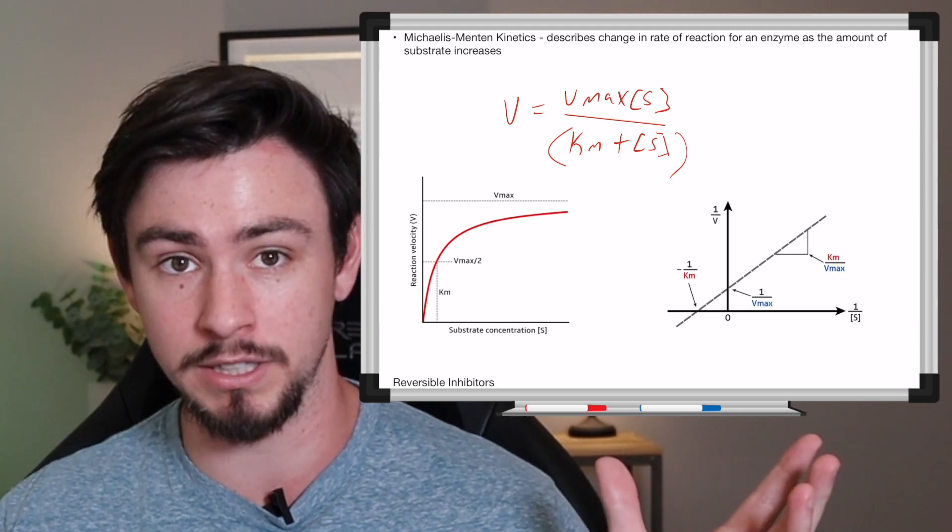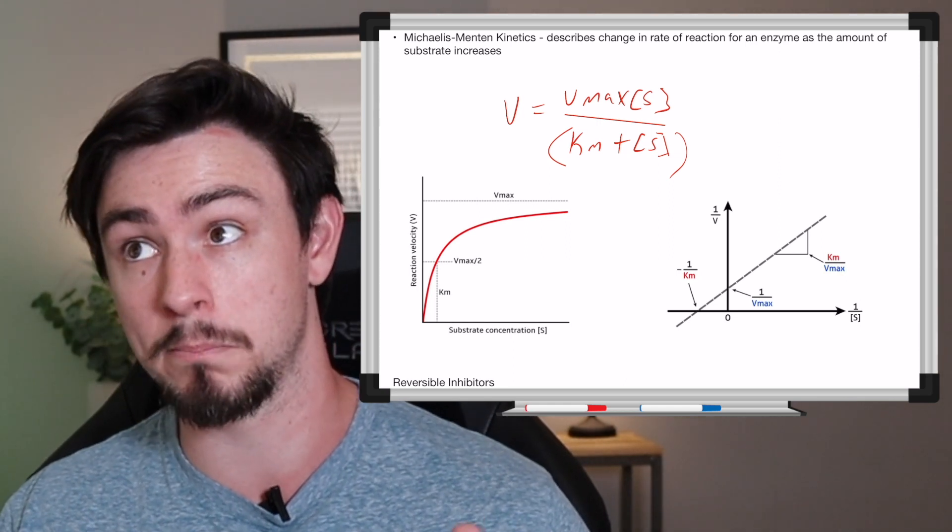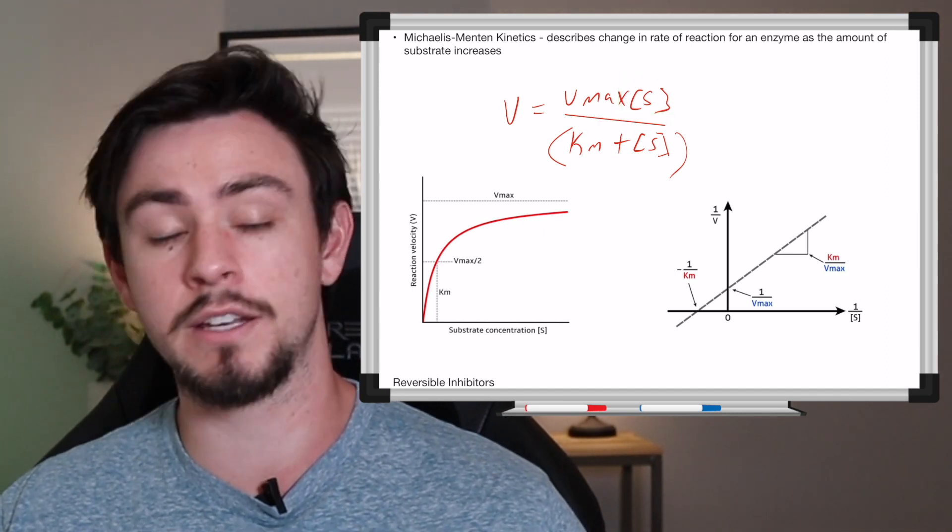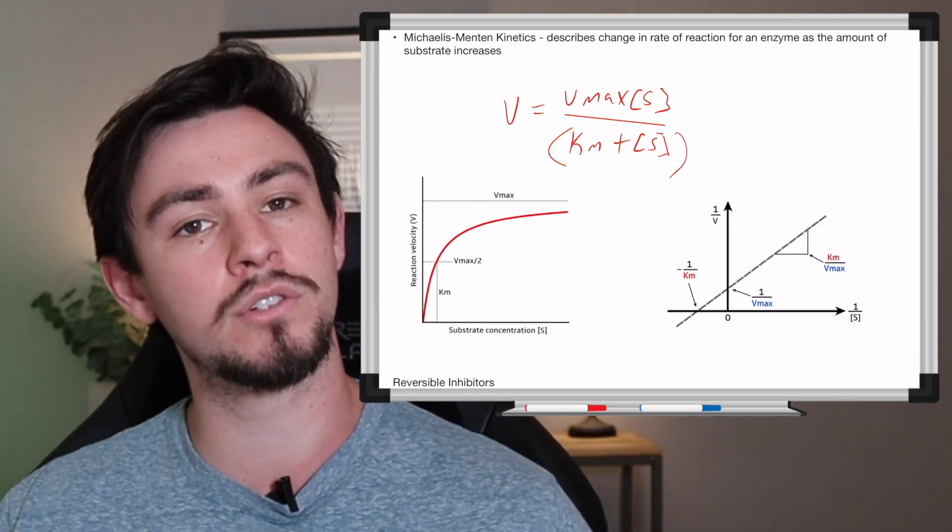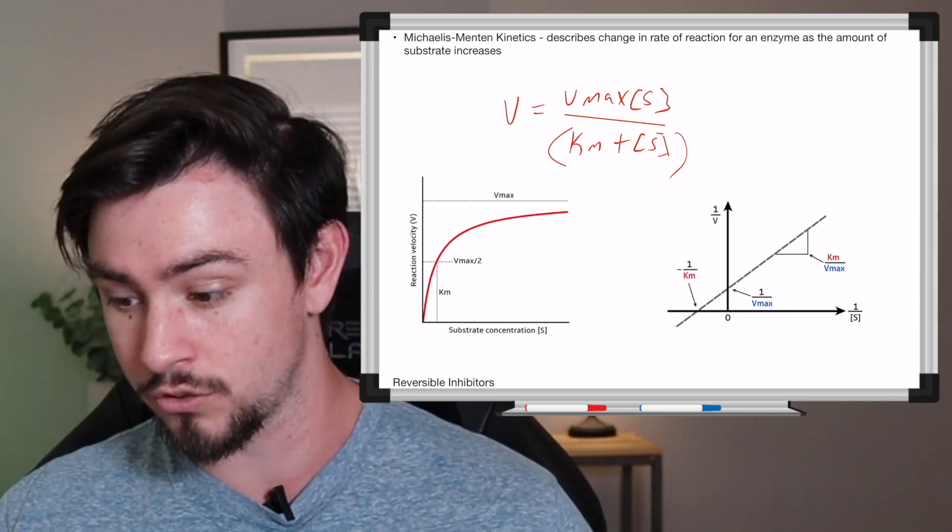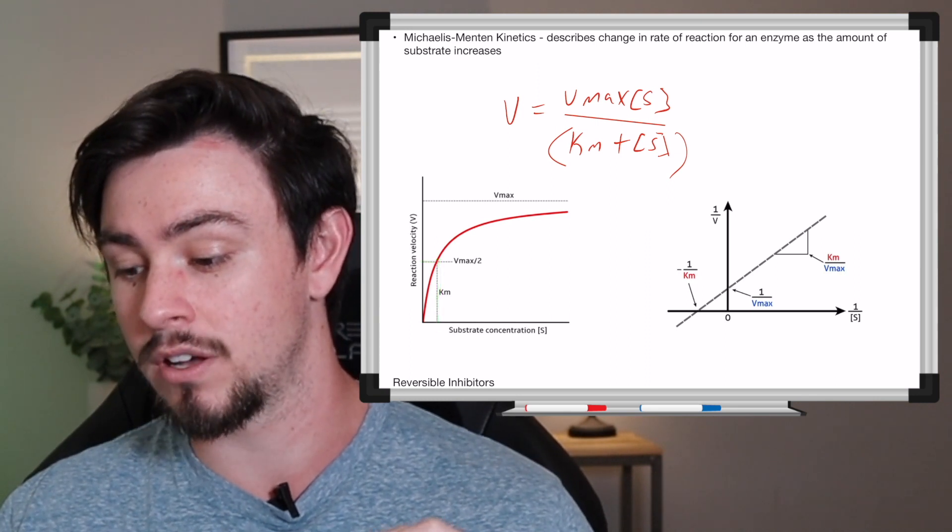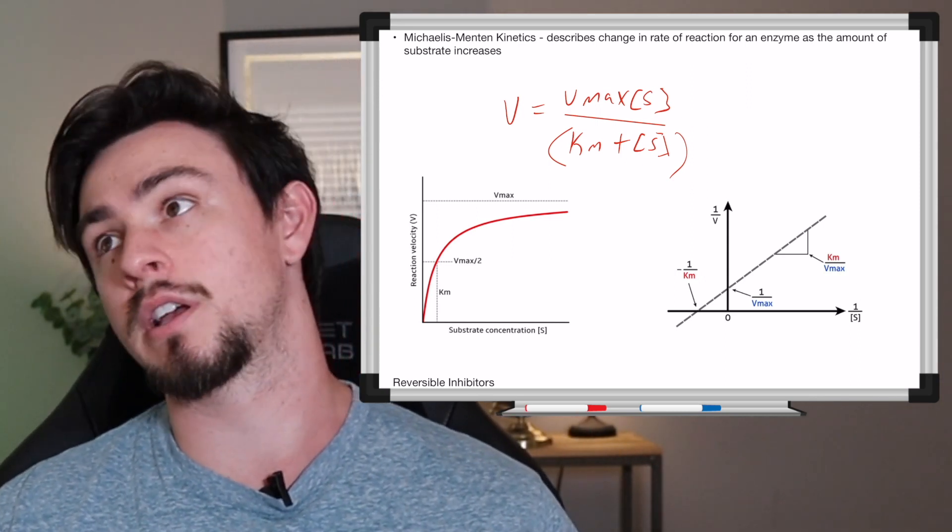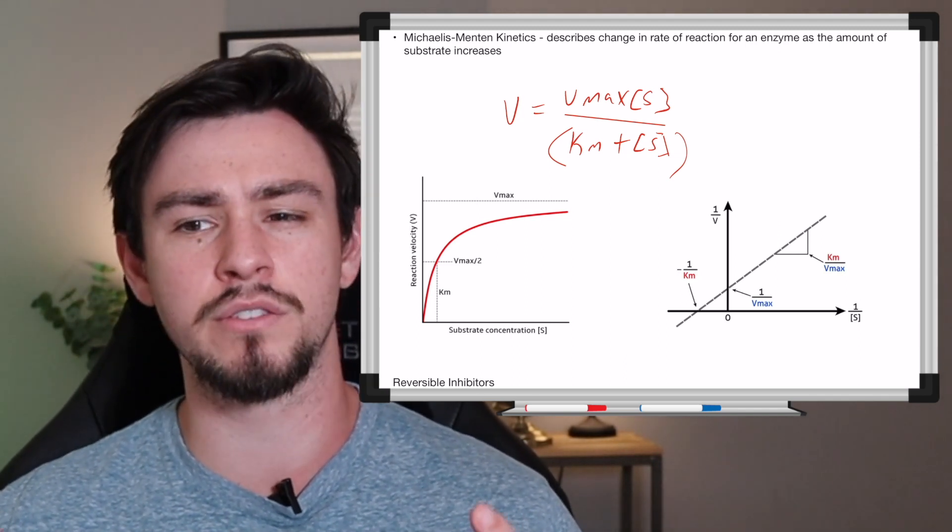Vmax is the maximum speed that that enzyme could possibly convert substrate to product depending on the amount of substrate. If substrate were no issue, how fast could I possibly go is the question, and that's Vmax. You can see that it's a straight line because it's the maximum. It's as fast as it can possibly go. Substrate concentration is pretty self-explanatory. It's how much substrate you have, but it's on this x-axis, and then Km. This is kind of the difficult one. Km is another description of substrate concentration, but it is the amount of substrate concentration at one half of the maximum velocity speed.